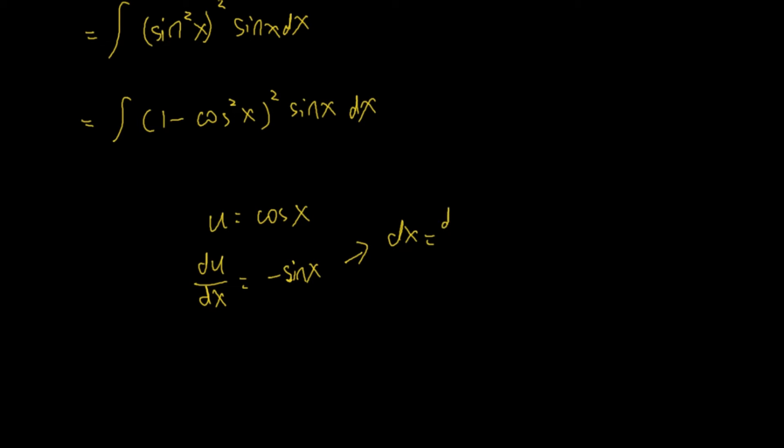Then I can rewrite this one as integral of (1 minus u^2)^2, where u is cosine of x, so cosine^2(x) is just u^2, squared. Sine x will stay as sine x times dx. Now dx is du over negative sine x.